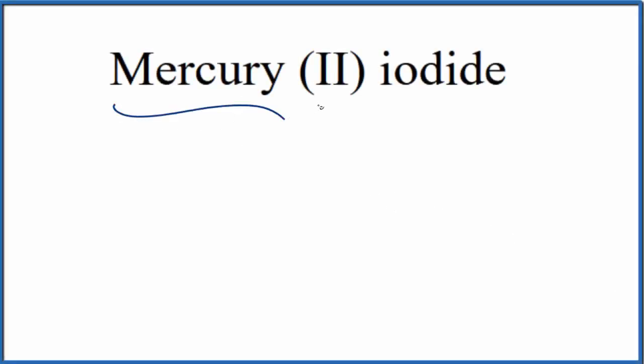In this video, we'll write the formula for mercury(II) iodide. When we see the Roman numeral 2 here in parentheses, we know that mercury is a transition metal.